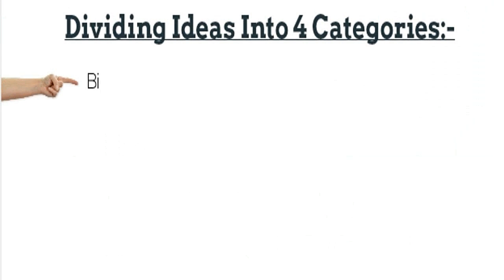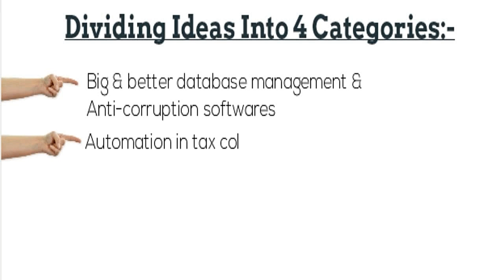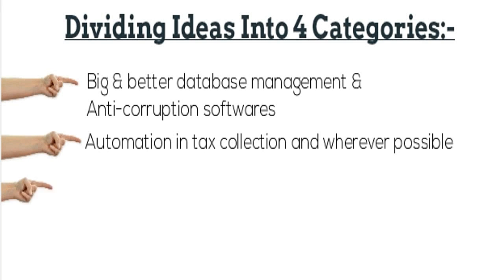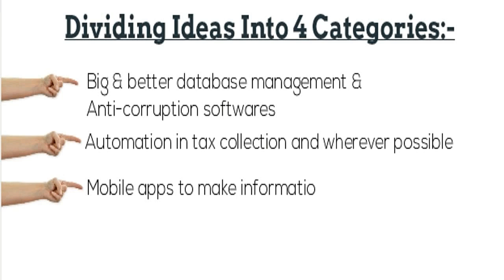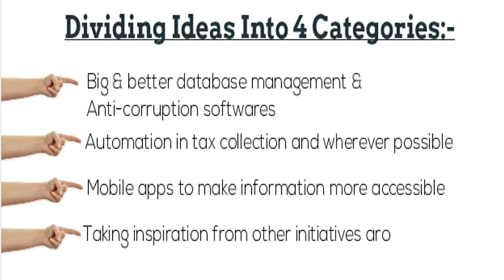Let's divide the ideas into four categories. Number one, big data and records management, and anti-corruption software automation. Number two, automation and tax collection. Number three, mobile apps to make information more accessible. Number four, taking inspiration from other initiatives around the world.